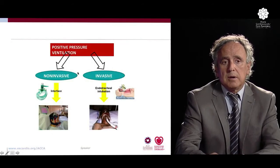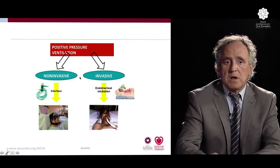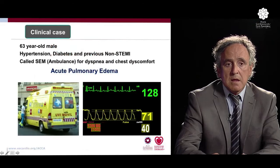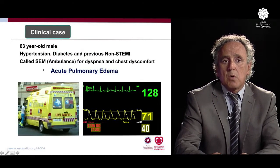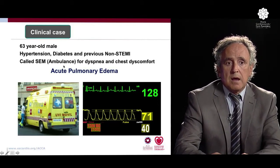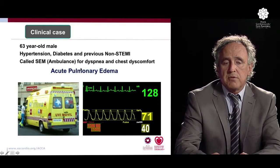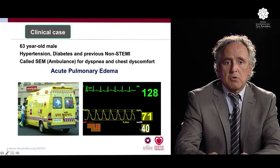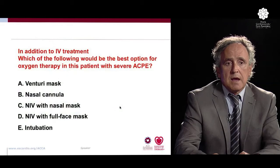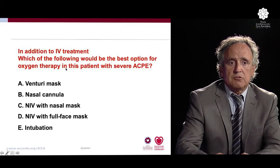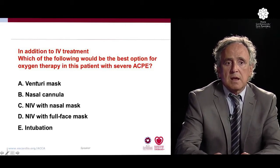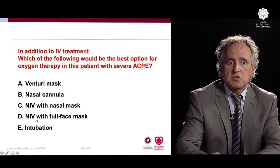Positive pressure ventilation can be applied in two ways: invasively through endotracheal intubation, or non-invasively, usually with a mask. This is a 63-year-old male with previous hypertension, diabetes, and prior non-STEMI who called the ambulance for dyspnea and chest discomfort and was diagnosed with acute pulmonary edema. Heart rate was 128, respiratory rate 40, oxygen saturation 71%, and systolic blood pressure 135/80. In addition to intravenous treatment, which would be the best option for respiratory therapy: Venturi mask, nasal cannula, non-invasive ventilation with nasal mask, non-invasive ventilation with full face mask, or intubation?